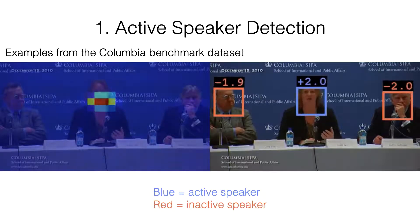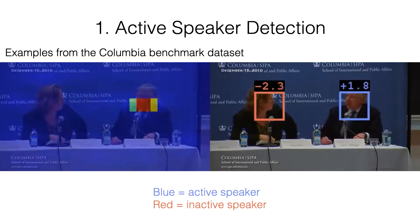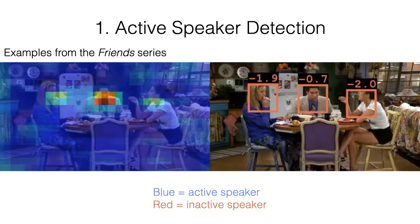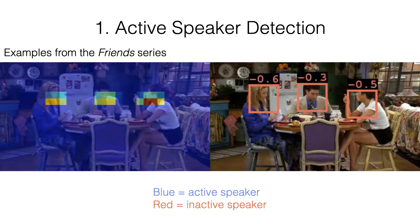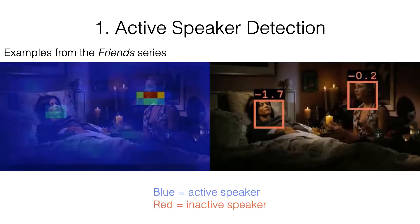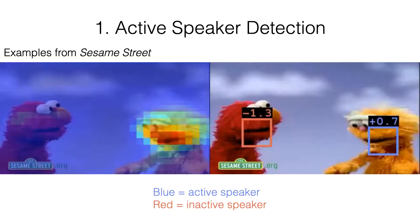We emphasize that contrary to previous works, our method doesn't use an external detector, but learns to detect and classify talking heads as speaking or not just by watching videos of people talking. Here are some more examples from clips from Friends. Our model has not seen any episodes from this series during training. We note that previous methods cannot be applied to this data because face detectors do not generalize well to non-human faces.